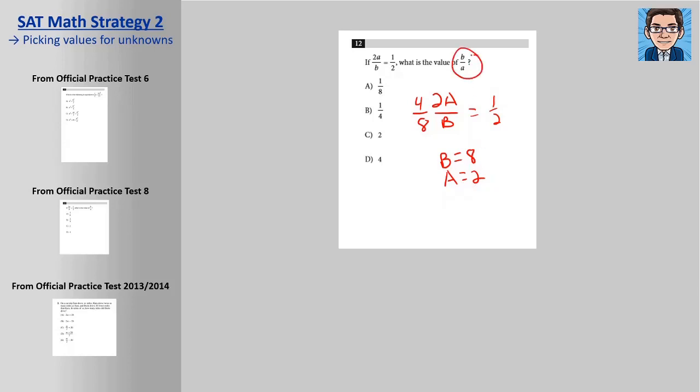Then to find the value of b over a, just go 8 over 2, which is 4, and D is your answer. So that might be a lot quicker. The other way to do it would be to cross-multiply and then solve for b over a.